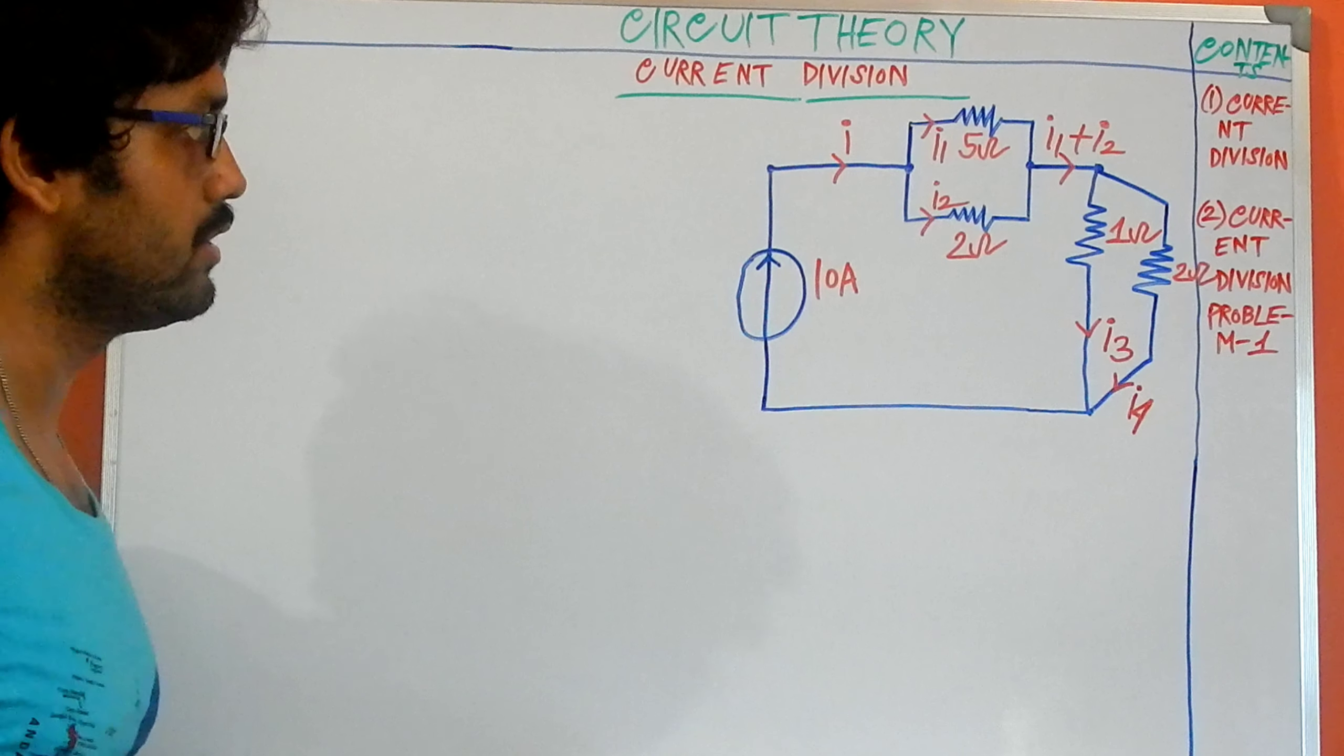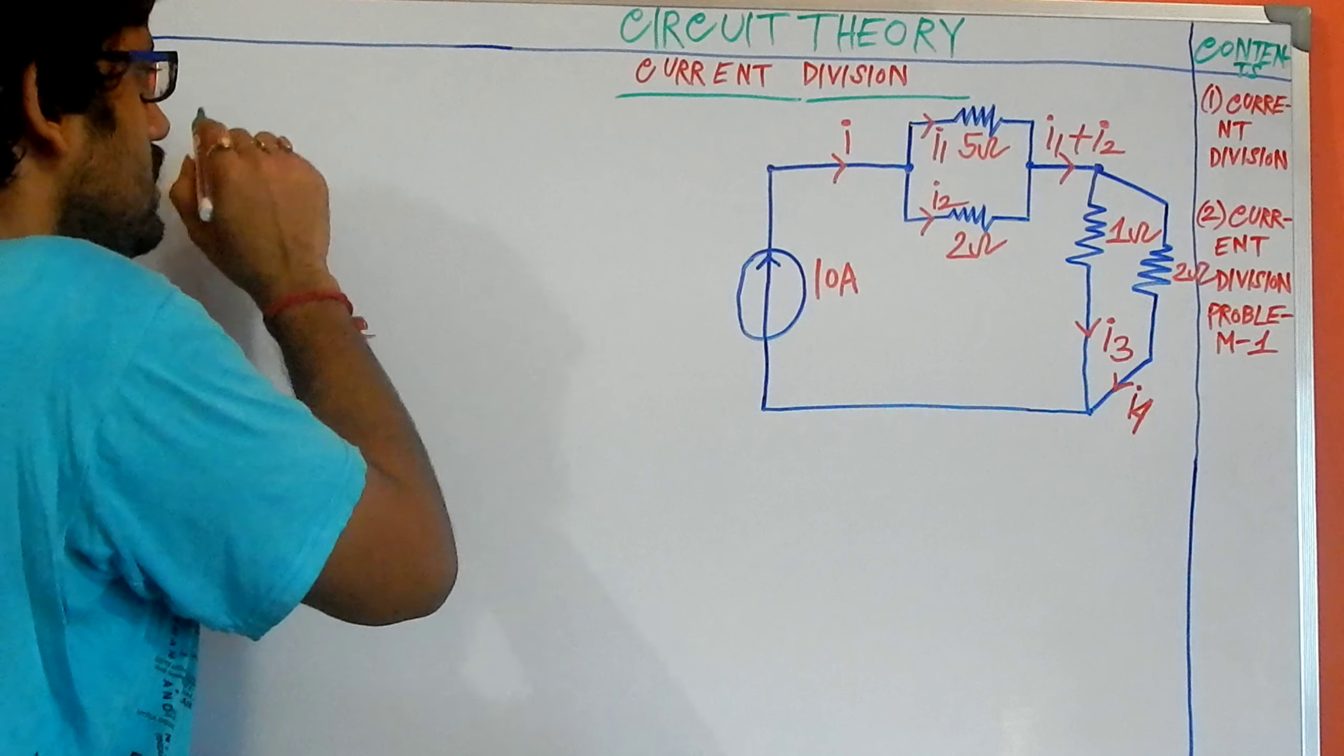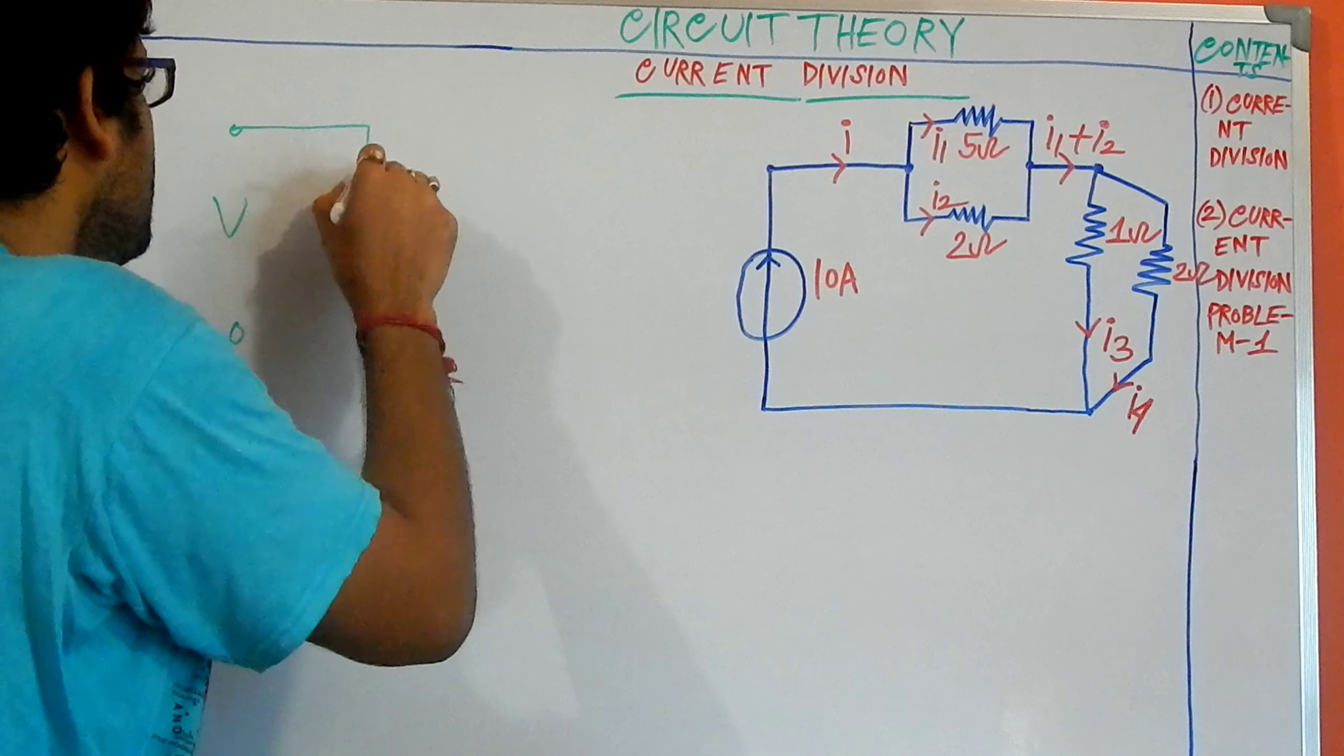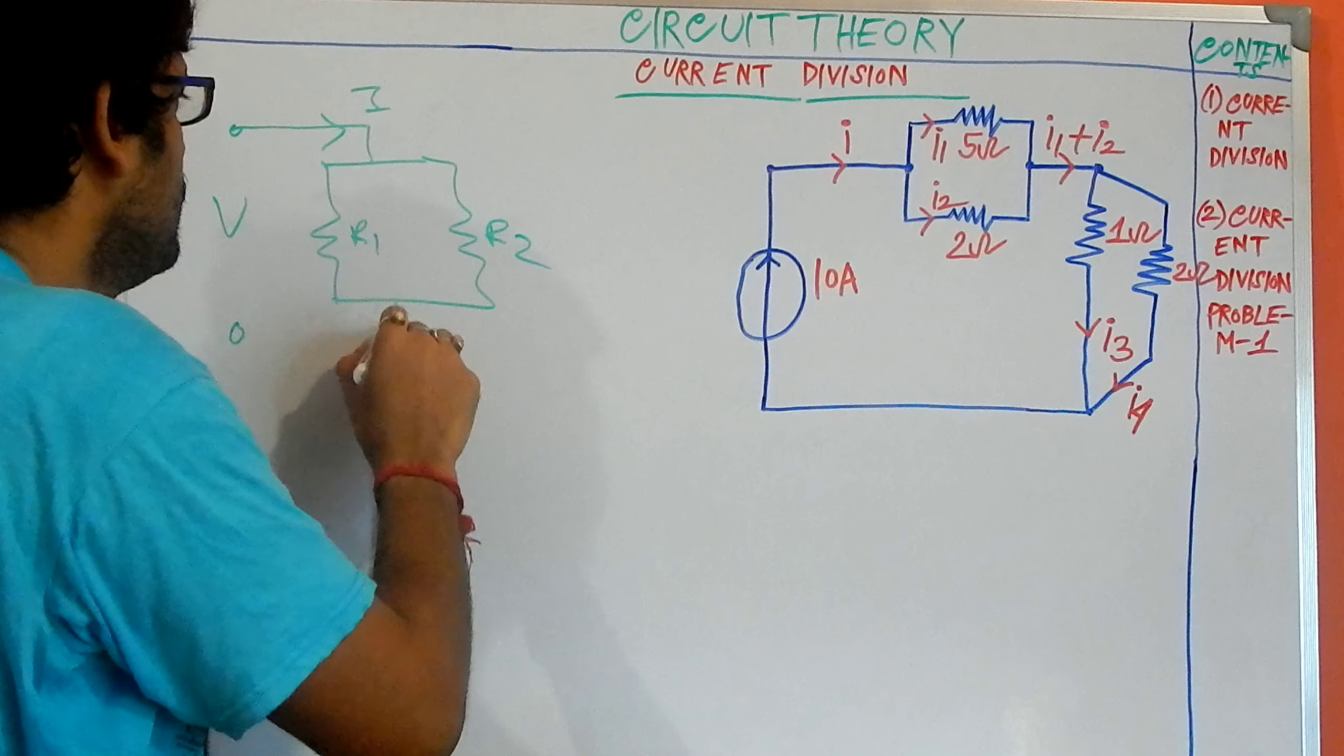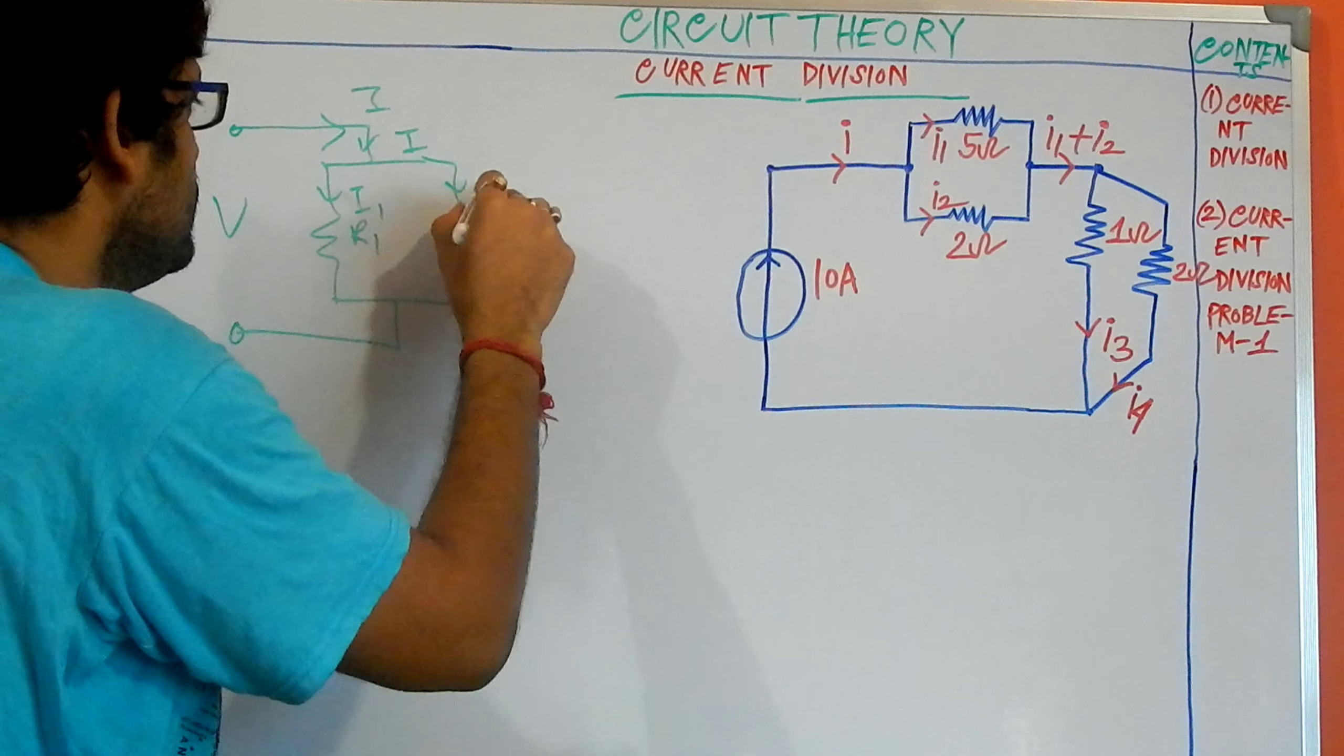In our previous expression for current division, if I rewrite the diagram, this is the voltage source and the current is coming. Here this is R1, this is R2, and this one is I1, this one is I2.